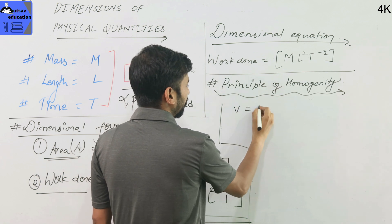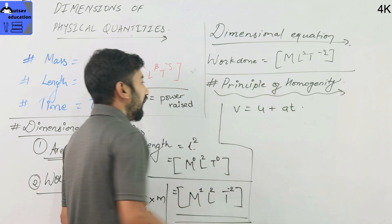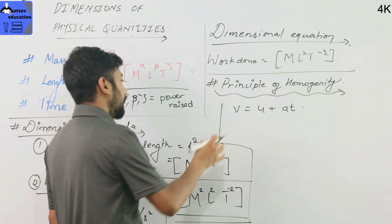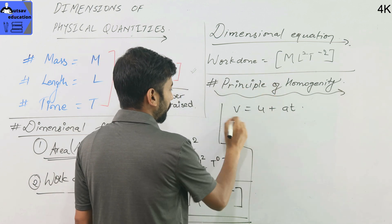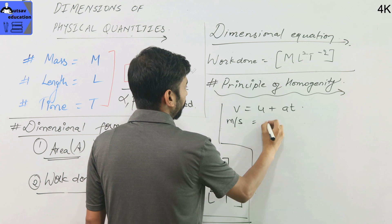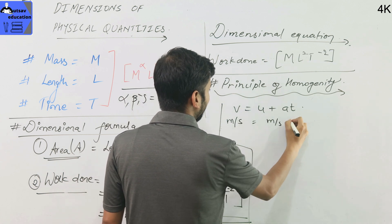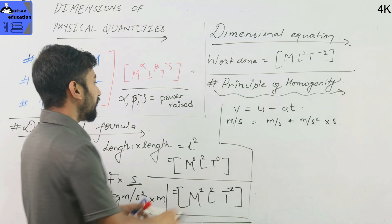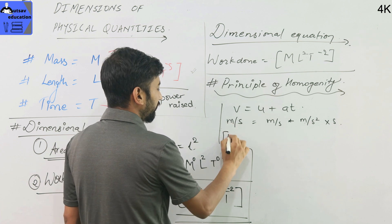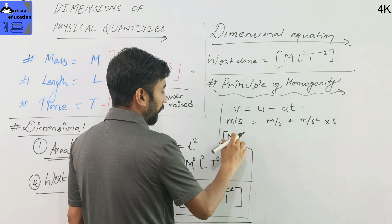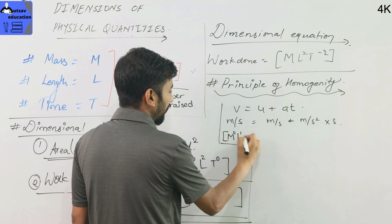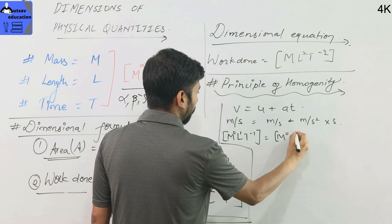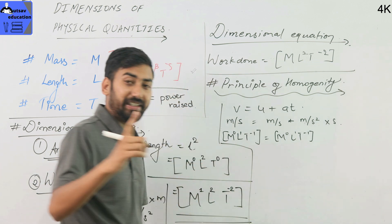For example, v equals u plus at — equations of motion. This is the dimensional formula check. Each term must have the same dimension. The velocity unit is meter per second, u is meter per second, and acceleration times time means meter per second squared times second, giving meter per second. In terms of dimensions: meter per second gives M to power 0, L to power 1, T to power minus 1.